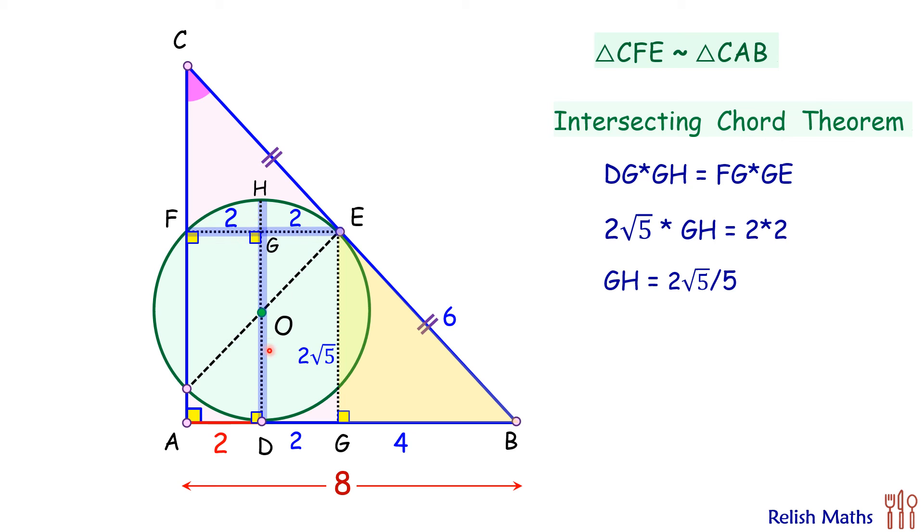Now the diameter of the circle will be DG plus GH, that is 2√5 plus 2√5/5. Solving it will get diameter as 12√5/5, and dividing by 2 we get radius as 6√5/5 cm, and that's our answer.